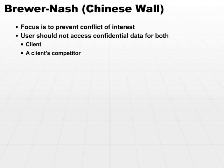If a user could access both types of information — both confidential data — that could cause a conflict of interest. And that is the focus of what the Chinese Wall or the Brewer-Nash model is attempting to protect against. Access control rules, in this case, do change user behavior or change what the user is able to do.